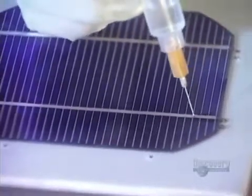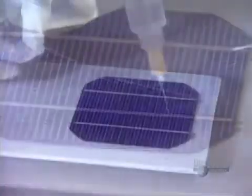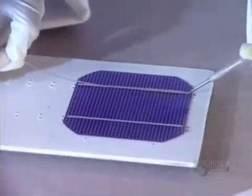To make a solar panel, several modules have to be connected together. Then they apply a soldering flux on each module. The soldering wire is heated with an iron.